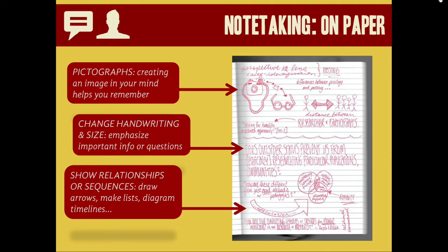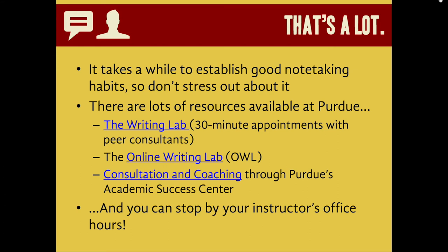Creativity is all about connecting ideas. It's hard to learn how to take notes, especially when you don't get any direct instruction in it. But there are lots of resources available at Purdue if you find yourself stuck. The Writing Lab, on the second floor of Heavilon Hall, has appointments available with peer consultants who can help you if you're struggling with how to interpret a difficult text. The Online Writing Lab, or OWL, is a world-famous resource with all kinds of guides, and you can schedule a virtual appointment with a tutor. There's also consultation and coaching available through Purdue's Academic Success Center where you can meet one-on-one or in a small group with an academic coach. And if you're in a writing class like English 106, 420, or 421, you can stop by your instructor's office hours.